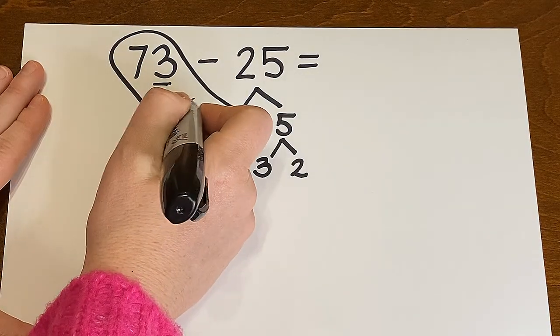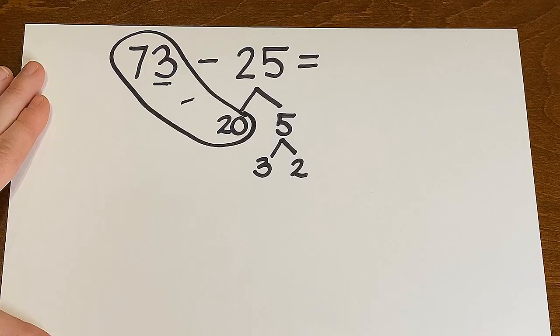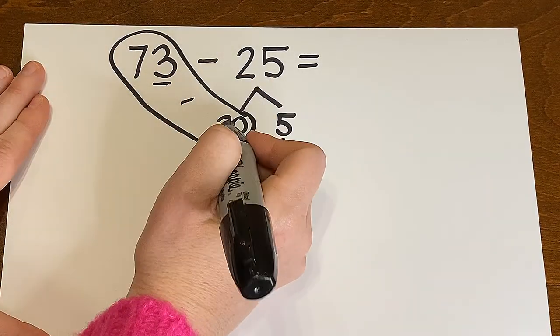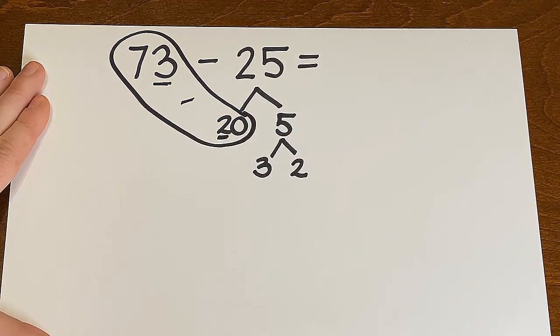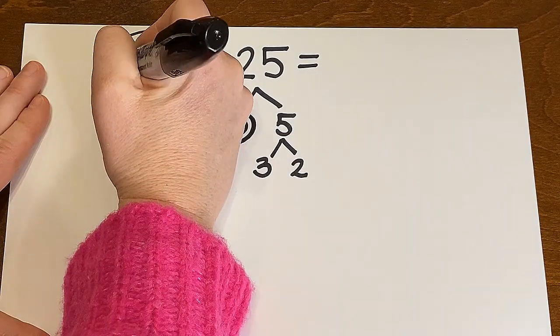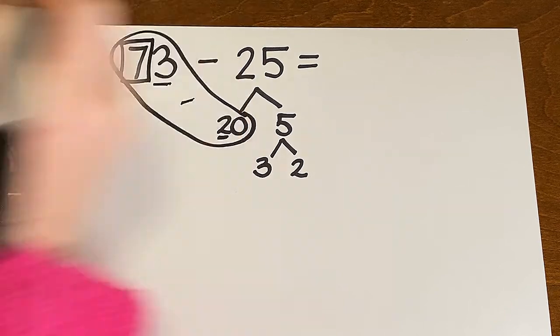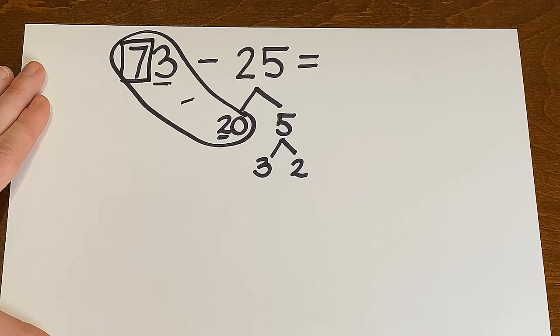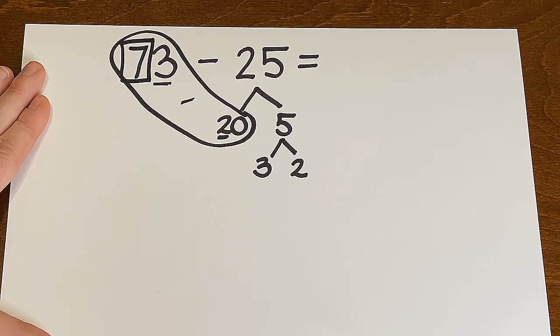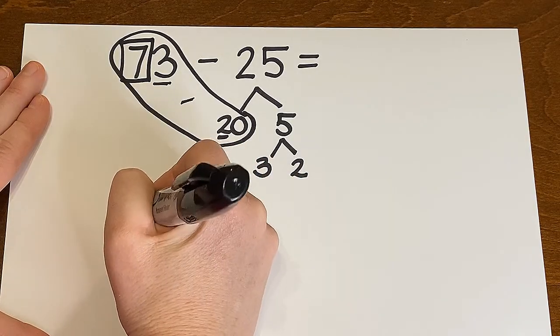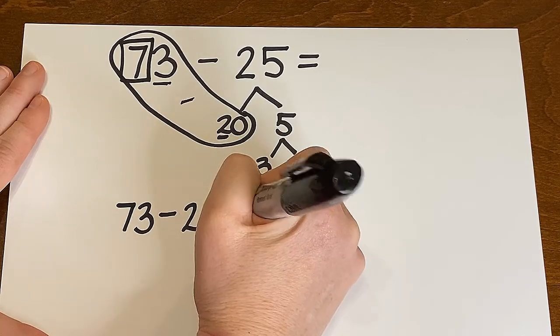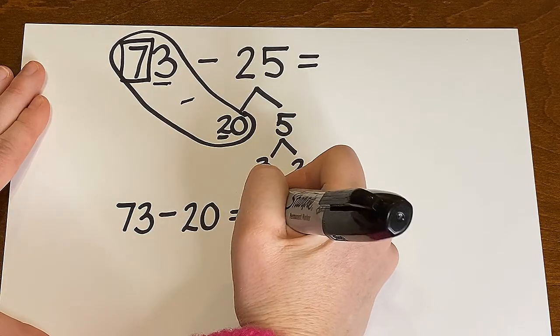73 take away 20. Now remember there is a 0 in the ones place. So we really are just going to be looking in the tens place. And I'm taking away 2 tens. Here's my tens. 73. I have 7 tens and I'm taking away 2 tens. What number am I at now? You've got it. 5. So the answer to 73 take away 20 is 53.